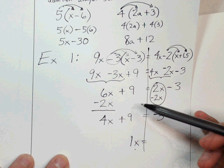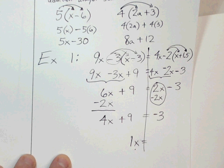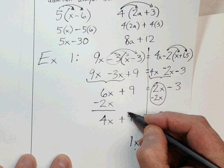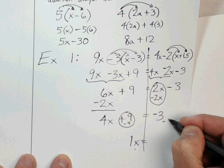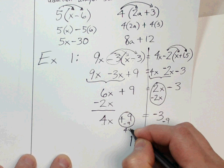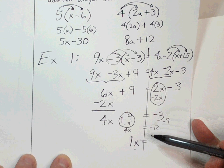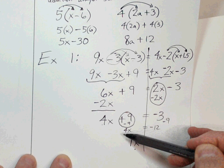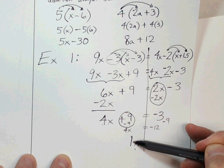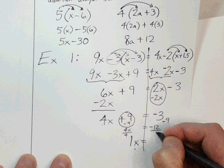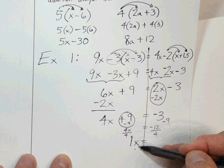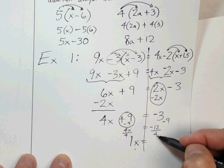Now zero out the constant on the left by subtracting 9 from both sides. 4x plus zero is 4x, and negative 3 minus 9 is negative 12. Now to get a coefficient of one, I divide both sides by 4. Four divided by 4 is 1, and negative 12 divided by 4 is negative 3. So x equals 3.